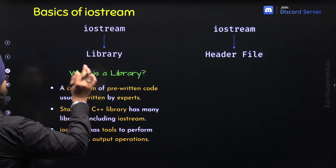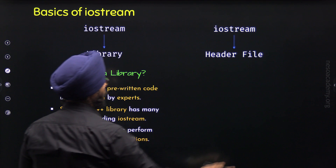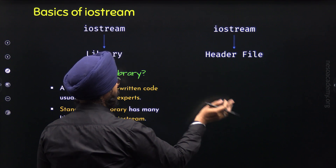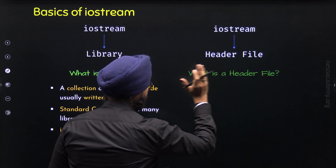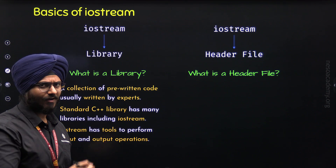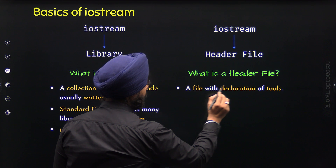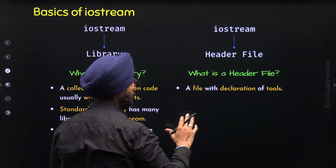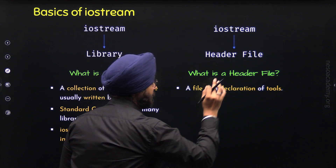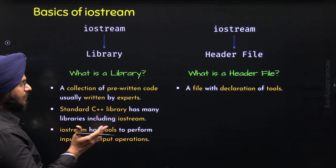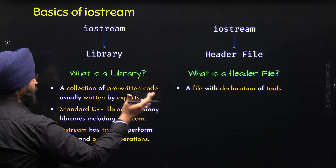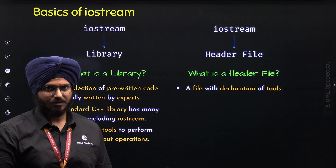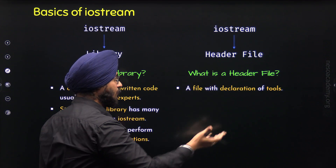Now we know what the Iostream library means. Let's understand what the Iostream header file is. In order to understand Iostream as a header file, we first need to understand what a header file is. A header file is a file with declarations of tools. You can think of it as a file which contains many declarations of the tools of a specific library. Now you might be thinking — why do we need a header file when we already have the library?